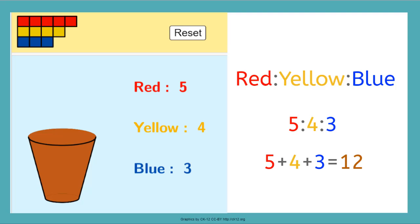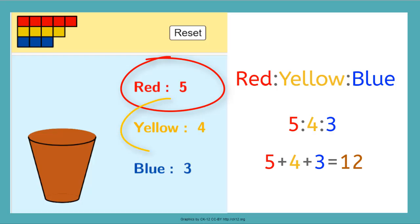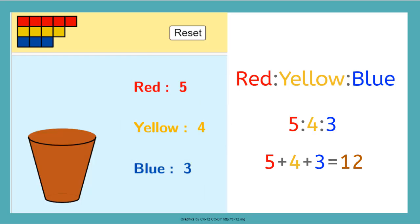In this type of ratio, the amounts of each color are called the parts. And the total amount of paint used is called the whole.